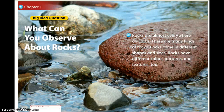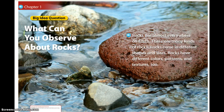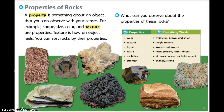Chapter one big idea question: what can you observe about rocks? Rocks are almost everywhere on earth. There are many kinds of rocks. Rocks come in different shapes and sizes. Rocks have different colors, patterns, and textures too. A property is something about an object that you can observe with your senses. For example, shape, size, color, and texture are properties.